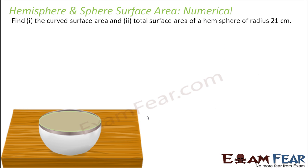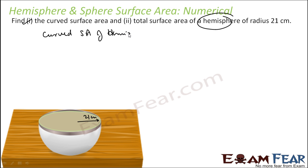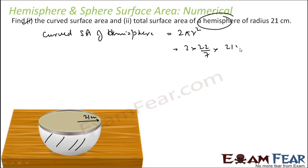Find the curved surface area and the total surface area of a hemisphere of radius 21 cm. The curved surface area of a hemisphere is 2πr². Substituting the radius of 21 cm gives 2 × (22/7) × 21 × 21 = 2772 cm².